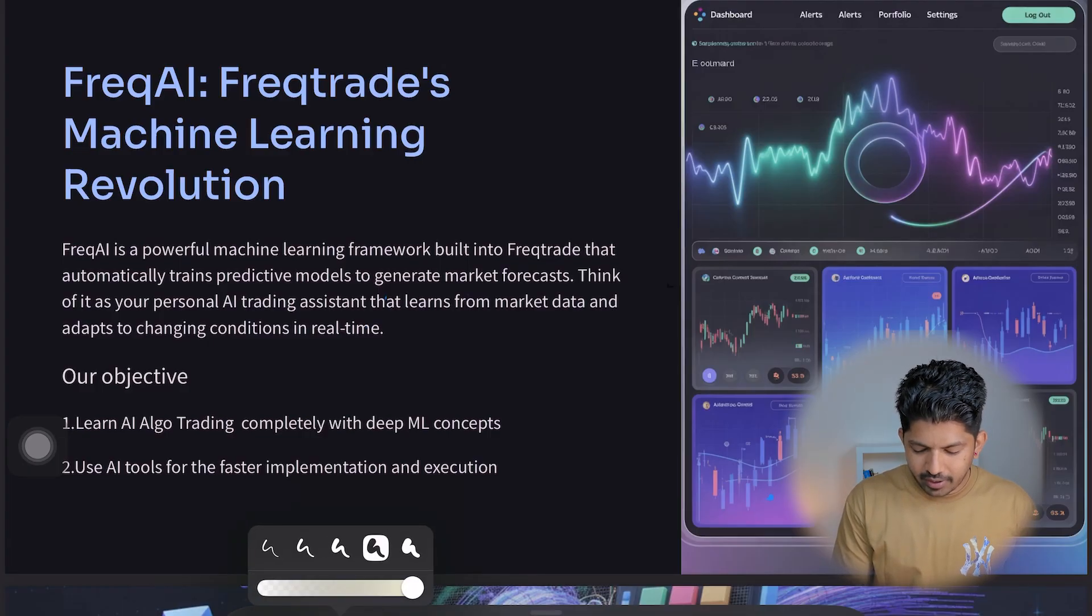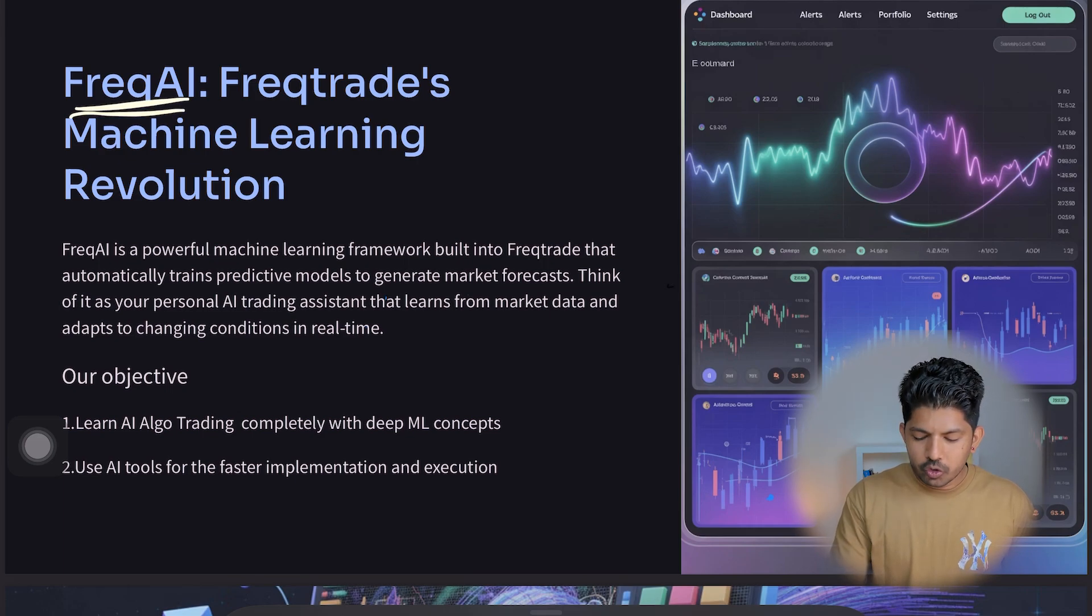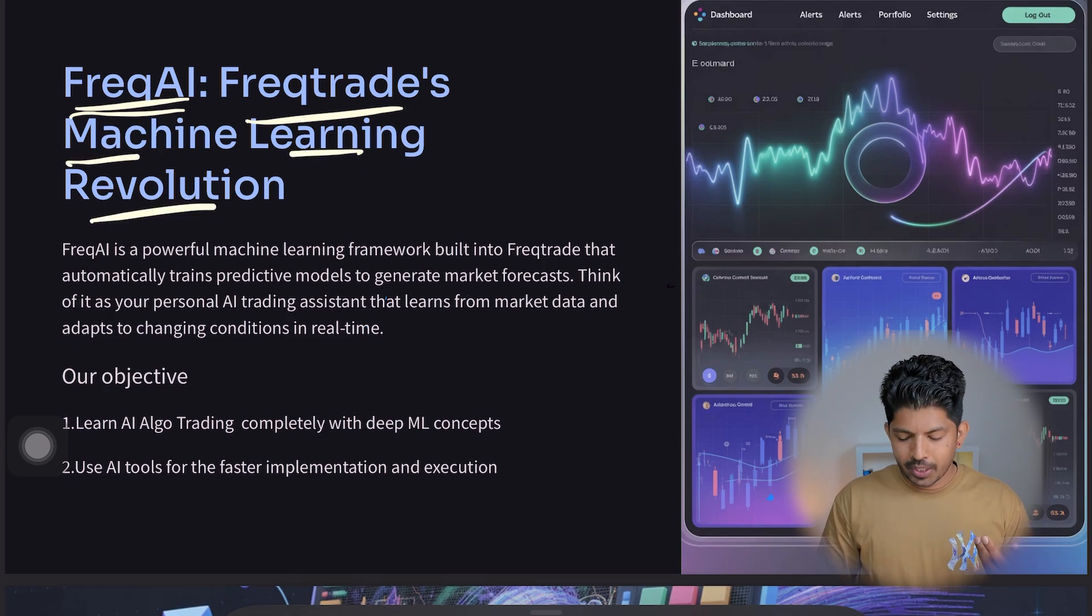For algorithmic trading, we will be taking the help of FreqAI. FreqAI is a part of Freqtrade, which is an open-source platform, and it is a fantastic platform. We can apply all these concepts anywhere—you can apply them in QuantConnect, you can apply them in MetaTrader. So it is universal. In this session, it will be kind of an introduction, but it's very important. From the next series, we'll be starting with the complete technical details, but it will be very basic, so don't worry.